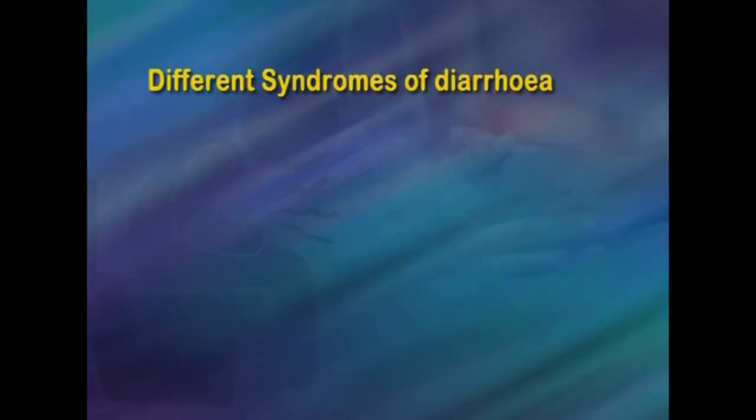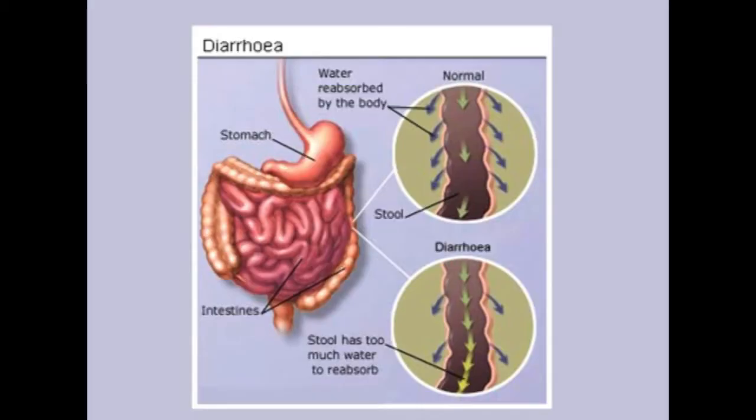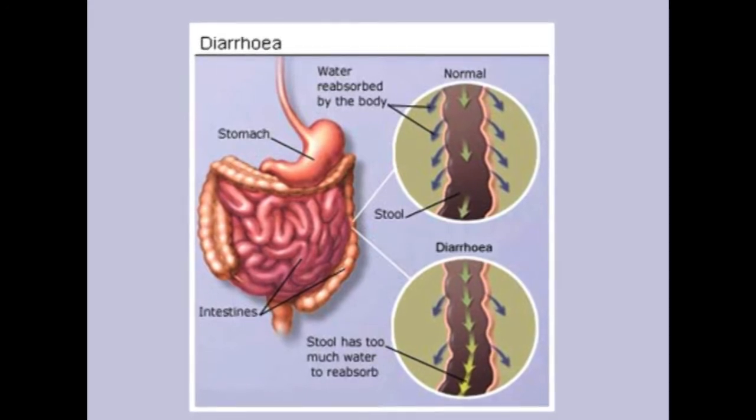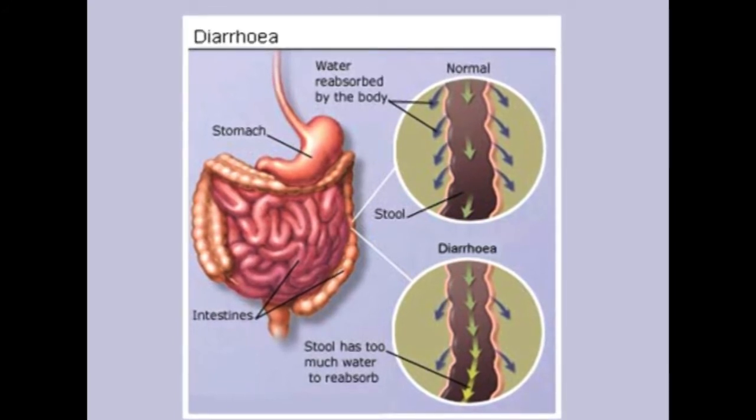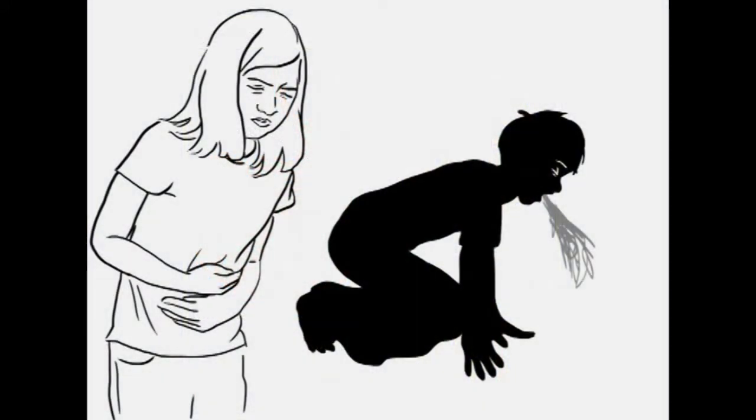We divide diarrhea into different types. Three different syndromes have been defined, each reflecting a different pathogenesis and requiring different approaches to treatment. The first is acute watery diarrhea, which refers to diarrhea that begins suddenly with passage of loose or watery stools without any visible blood. Vomiting may occur and fever may also be present. If diarrhea occurs for more than 14 days it is called persistent diarrhea.